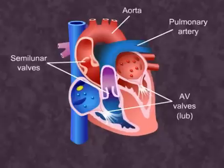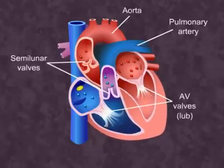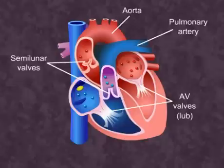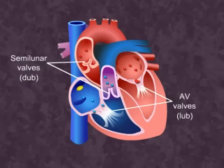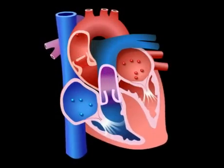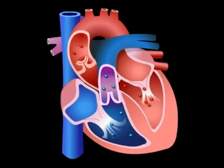Now observe that the ventricles are in a relaxed state. During ventricular diastole, the ventricles relax, arterial pressure falls, and blood begins to flow back into the ventricles. This reversal of pressure causes the semilunar valves to shut, producing the second heart sound, DUB. So now you know what produces the sound LUB-DUB.